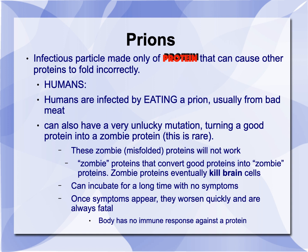That takes us to prions. Prions are infectious particles made of proteins that can cause other proteins to fold incorrectly. In humans, you get infected by a prion typically by eating a prion from bad meat. This was a problem in the early 90s when there was an epidemic of BSE, or bovine spongiform encephalopathy. If you ate a tainted cow that had nervous tissue in it, you could end up with a prion disease. You could also get a very unlucky mutation turning a good protein into a zombie protein, and this mutation is rare.